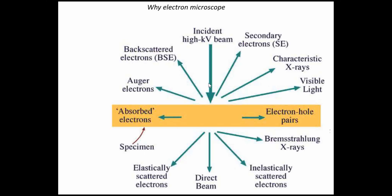If this incident beam generates X-rays from the sample — as we have seen in our XPS discussion — those characteristic X-rays are utilized in XPS and related techniques. What we use in SEM are secondary electrons and backscattered electrons. Secondary electrons are generated from the collision between the incoming electron and loosely bound outer electrons. We will now see these two in detail.